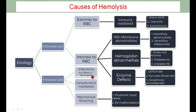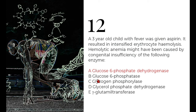Intravascular causes include infections like malaria and Clostridium perfringens, complement-mediated hemolysis, and mechanical shearing — destruction of RBCs by prosthetic heart valves or AV malformations. The answer to question 12 is G6PD (glucose-6-phosphate dehydrogenase) deficiency — the only enzyme listed causing hemolytic anemia in this context.